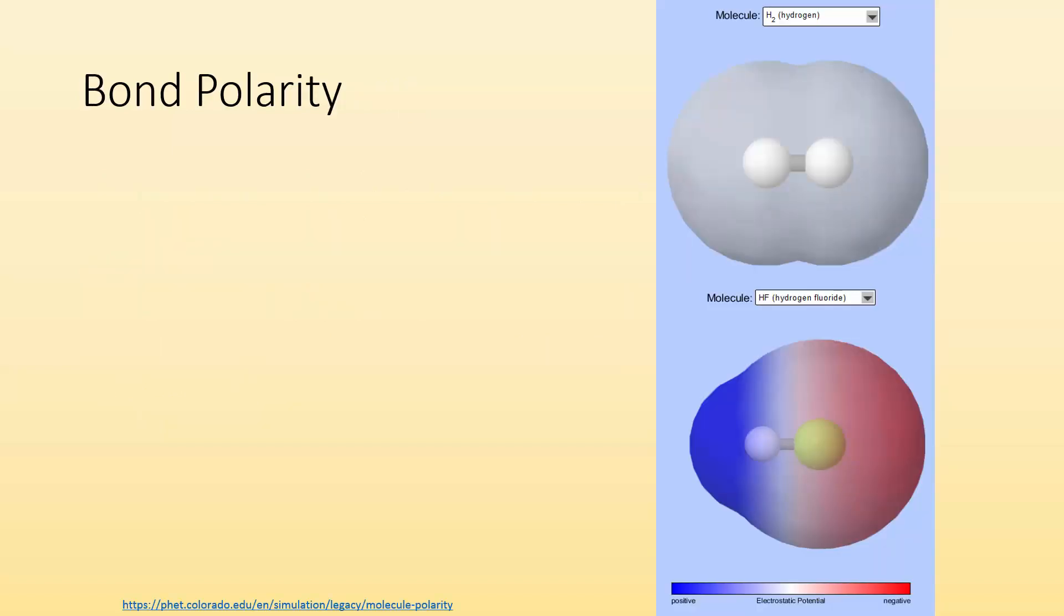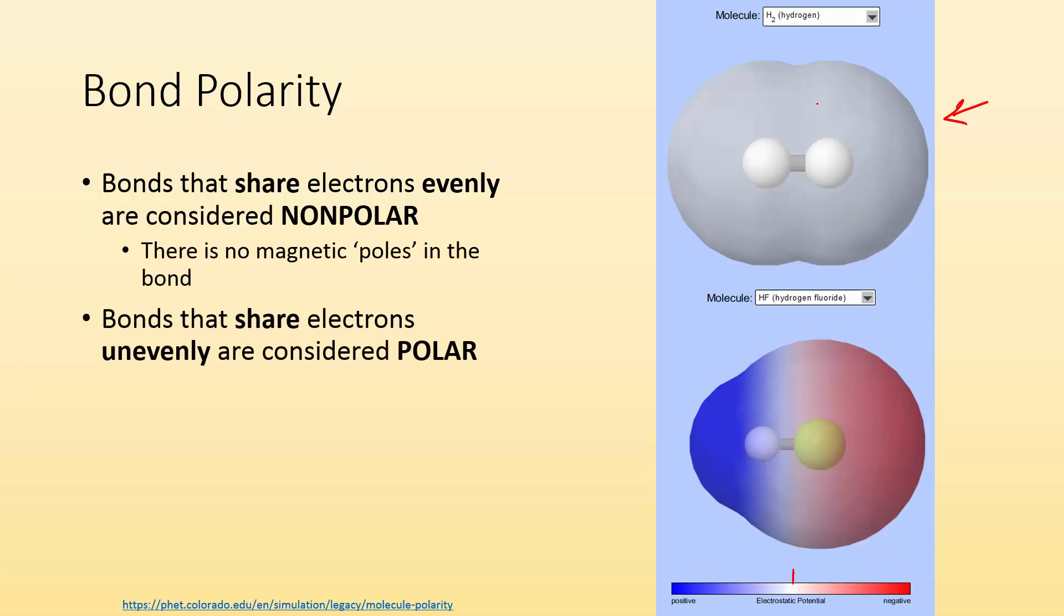This is where we get into bond polarity. Bonds that share electrons evenly are considered nonpolar. If you take a look at this example, the electrostatic potential, or basically the charge, is neutral through the whole molecule. It's nonpolar. There's no north or south pole, no positive or negative pole.